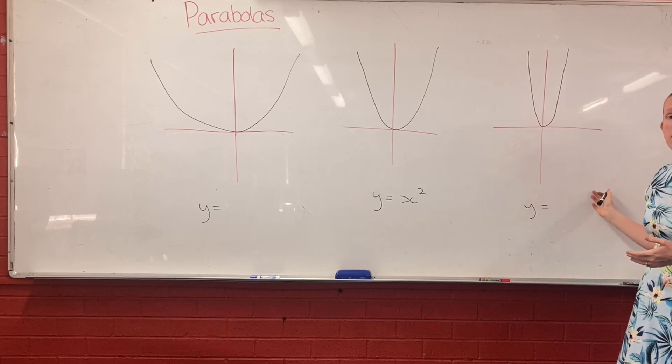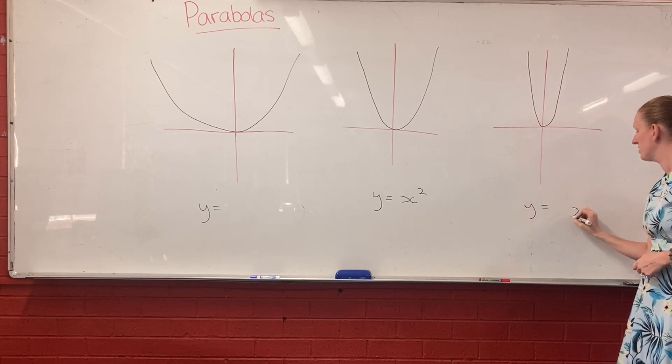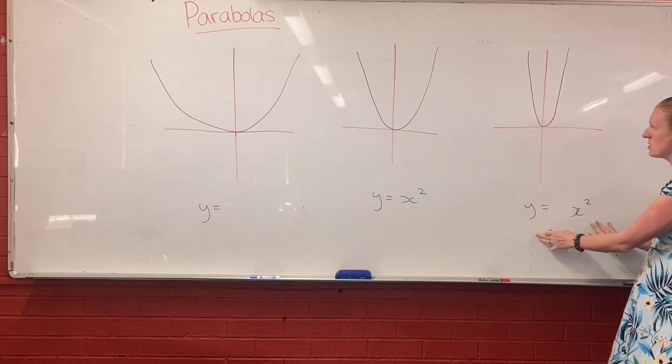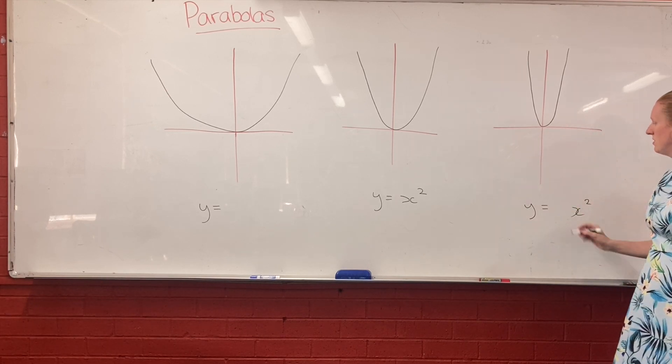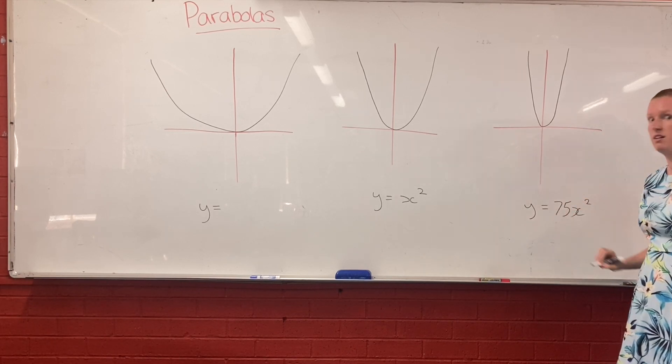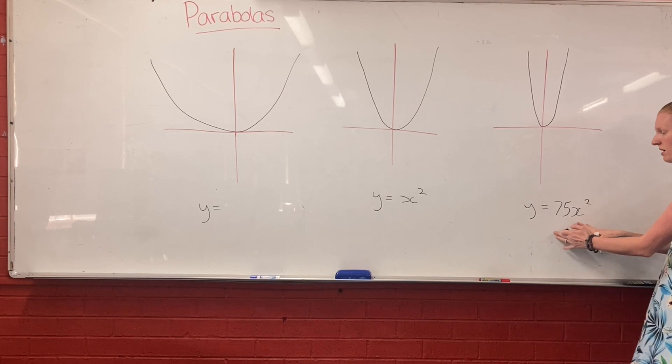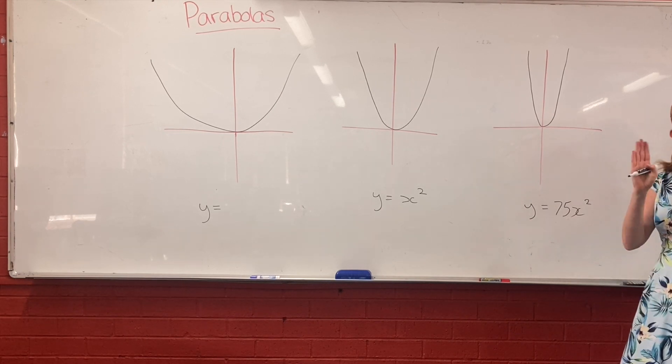So the thing that makes our parabola super thin is a big number in front of the x. So instead of it just being y equals x squared, it might have a, I don't know, 75 in there. The higher the number in front of the x, the thinner your parabola will get.